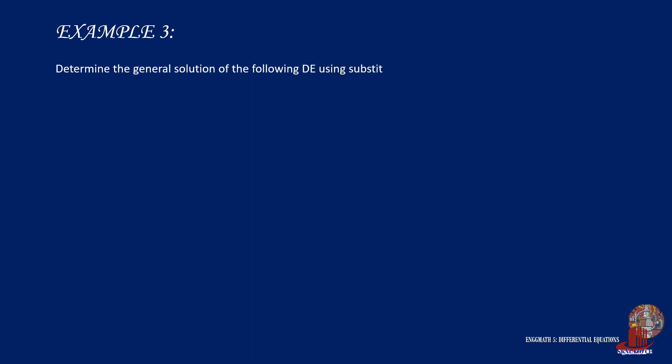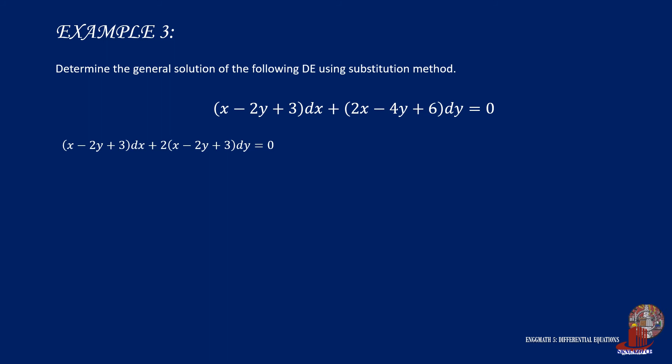Example 3 uses substitution method for the equation: the quantity of x minus 2y plus 3 times dx plus the quantity 2x minus 4y plus 6 times dy is equal to 0. By careful checking, it is noted that the second term can be simplified — extracting 2 from it makes it similar to the first term's coefficient. So we substitute z into the same quantity from both terms, which is x minus 2y plus 3. Then dz will be dx minus 2dy, and choosing dx, we transpose 2dy to the other side to have dx is equal to dz plus 2dy.